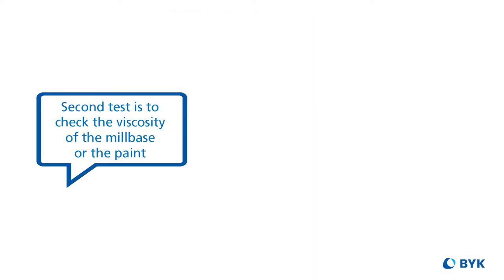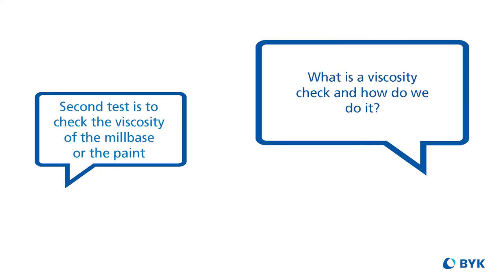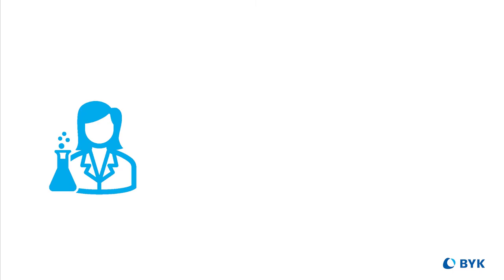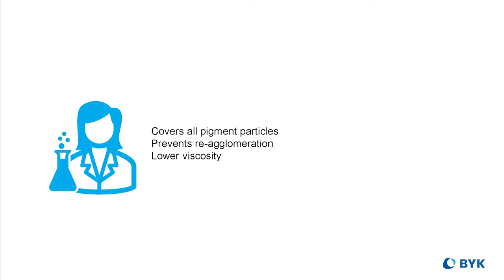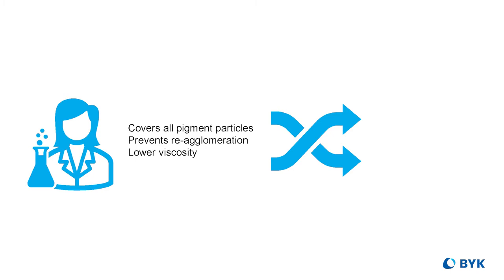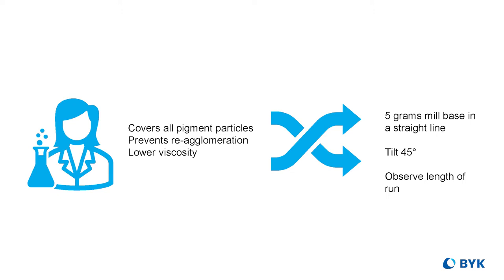The next important test to select the right dispersant is a viscosity check of the mill base or the paint. An efficient wetting additive is designed to cover all pigment particles uniformly and prevent re-agglomeration; therefore, with the correct additive the mill base or paint viscosity is the lowest. The best way to determine mill base viscosity is to use a cone and plate viscometer. A quick lab check can also be done by placing about 5 grams of each mill base sample separately in a straight line on a white panel, then slowly tilting the panel to approximately 45 degrees and observing the flow — the paint with the lowest viscosity will have the longest run.